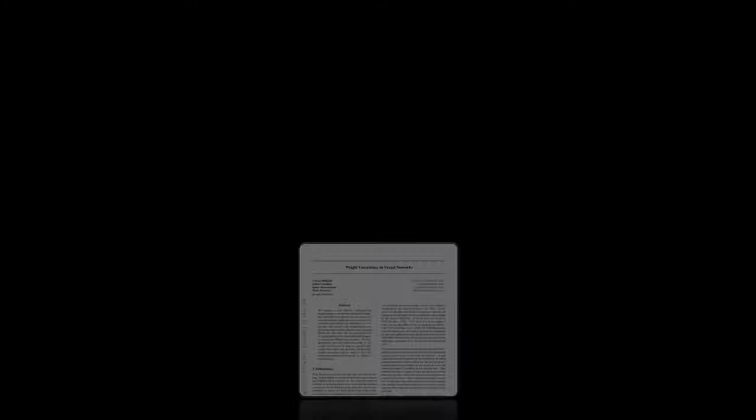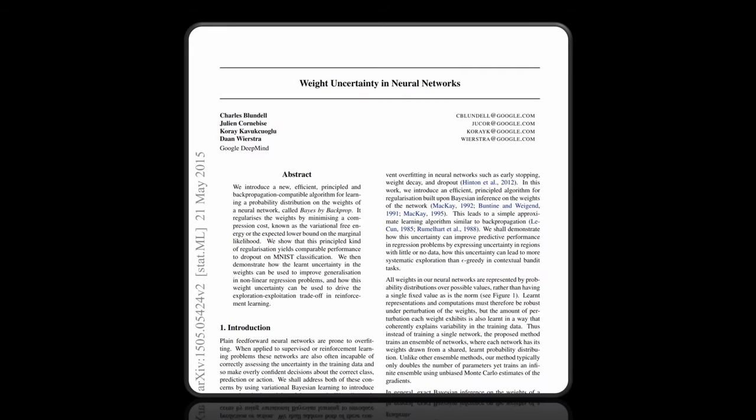The by far most popular method to estimate epistemic uncertainty are Bayesian neural networks. They are out there since the 1990s but got really popular after approaches for more efficient calculations in deep neural networks were presented. In a paper from a group of researchers at Google DeepMind the method Bayes by backprop was proposed in 2015.